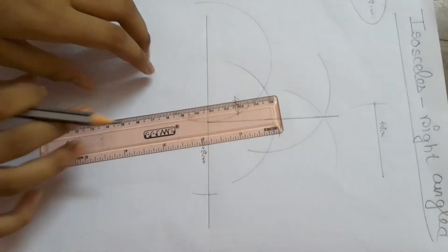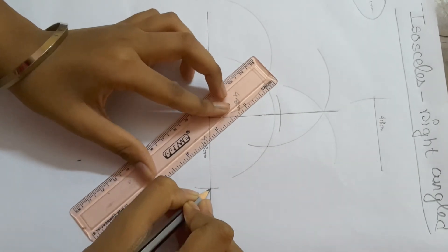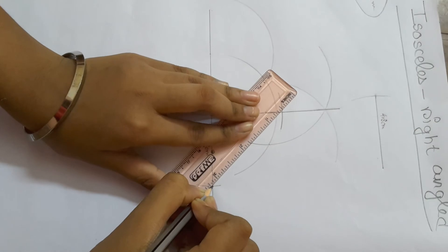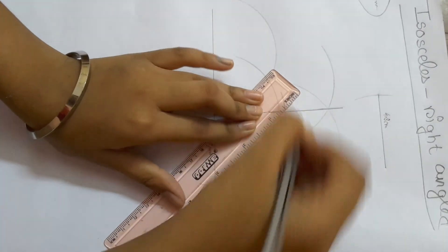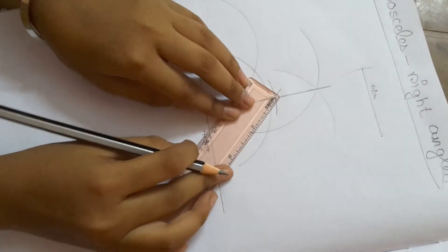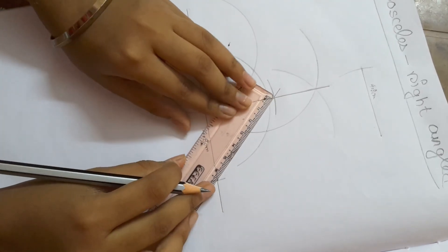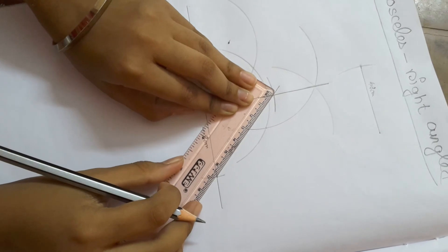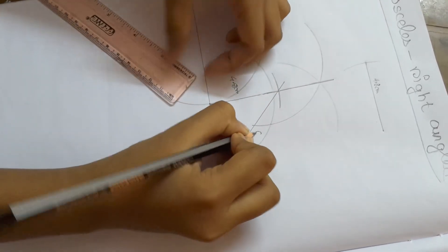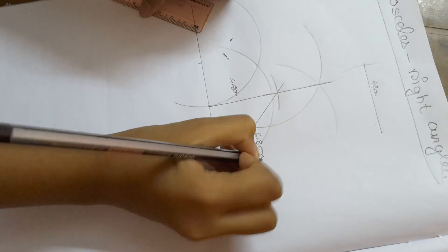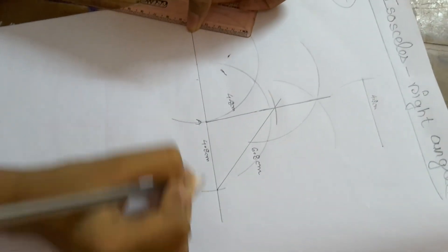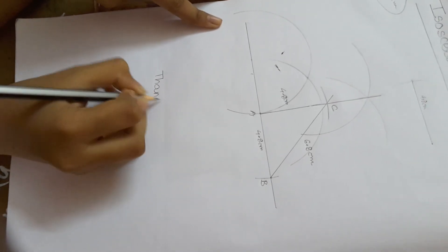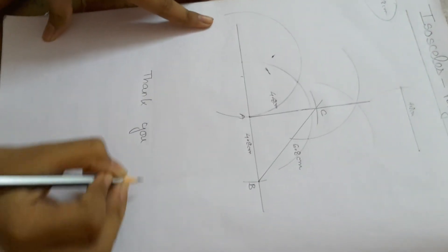Take the scale and join the angle. Join these two lines. Let's check how much it is. It is 6.8 cm. Thank you.